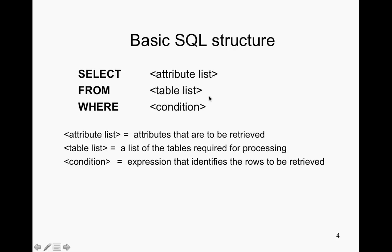The student table is the master table. And WHERE can be different conditions — what else you want from that table. If you just do SELECT student ID FROM student table, then you're just going to get a whole column of student IDs. The WHERE clause is where you can narrow down which student IDs you want.